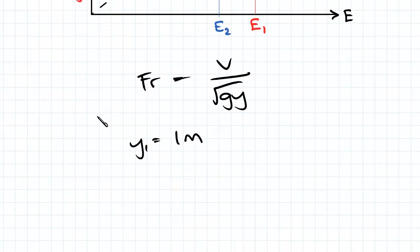We know that Q equals v times area, area is b times y which is 3m cubed per second. Solving for v we get v1 equal to 3 divided by 2 times 1 which is 1.5m per second.